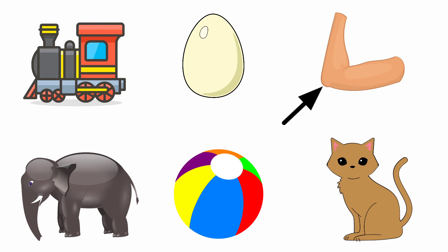First one — engine. The beginning sound of the picture 'engine' is 'eh', and the sound of the letter E is 'eh'. Both are same sounds. So we are going to tick the picture engine.